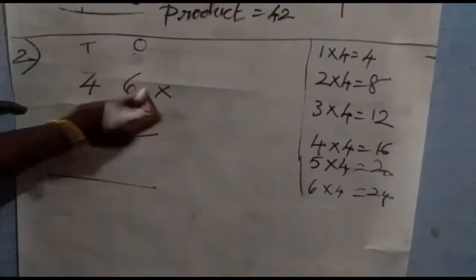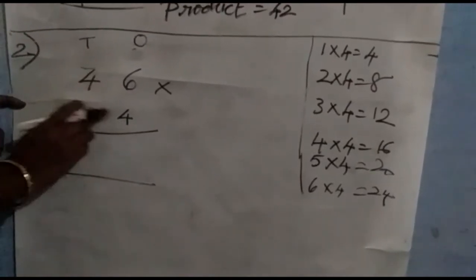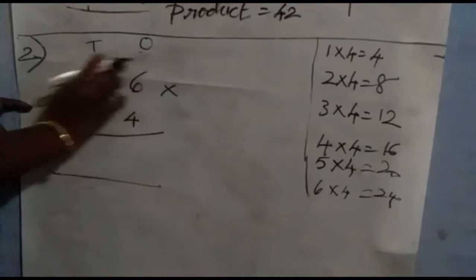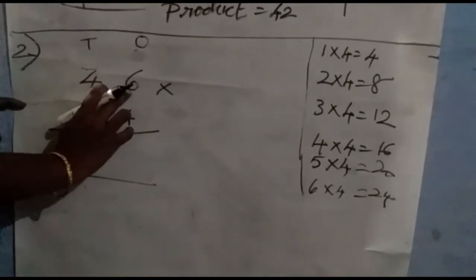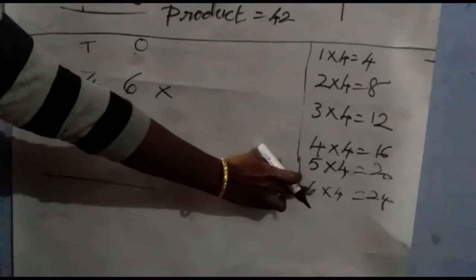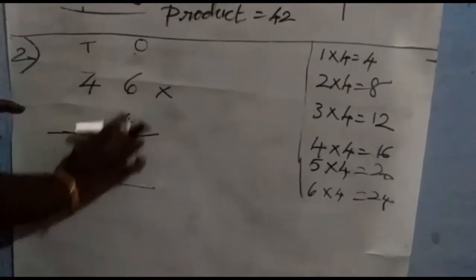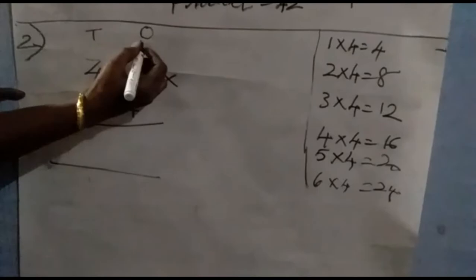Next sum: two-digit by one-digit number. Among these two numbers, six is the bigger number. So write the four times table up to six. We are going to use the four times table, so write it up to six.